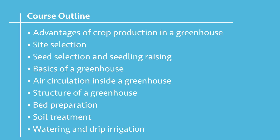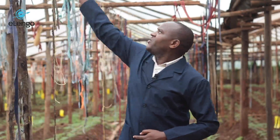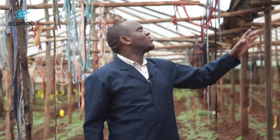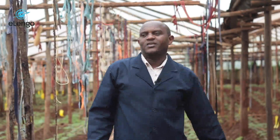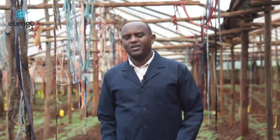Then we are going to look at the greenhouse structure itself — the various aspects inside the greenhouse. That is the structure itself: we are going to look at the polythene, the shade netting, the side netting, the trellis — that is the wire support — and the other support that holds that wire. We are going to look at the twines as well. All those are the aspects we are going to look at.